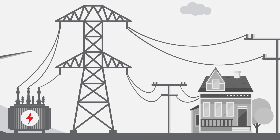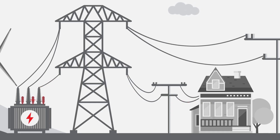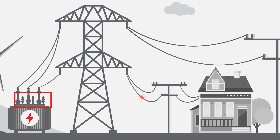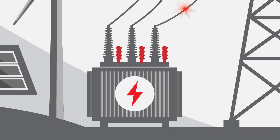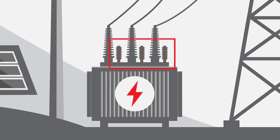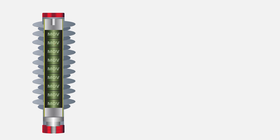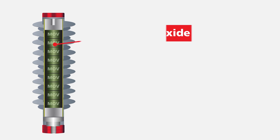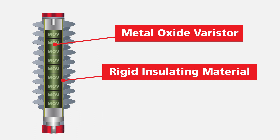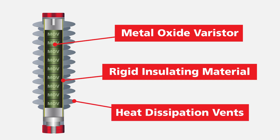A crucial device in electrical engineering is the unassuming surge arrestor, usually found on top of the transformer. Surge arrestors are made of a metal oxide varistor that is housed inside a rigid insulating material surrounded by heat dissipation vents.